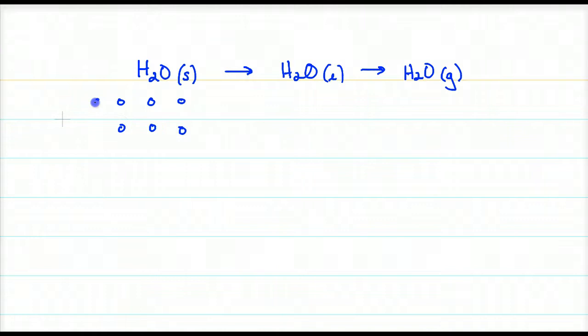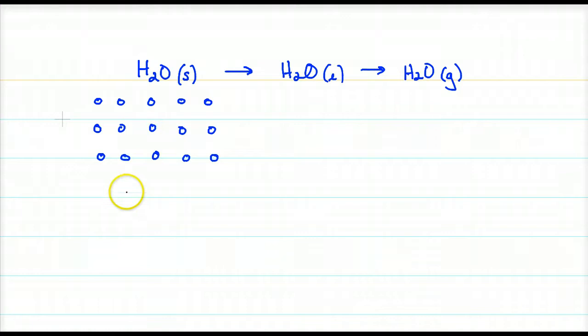Solids vibrate in their fixed positions and have a crystalline structure — a repeating geometric arrangement. For those that have studied crystals: face-centered cubic, body-centered cubic. Here's my 3D arrangement, though I'm drawing it in two dimensions, of my crystalline structure — let's say of ice, even though ice makes more of a hexagonal structure.